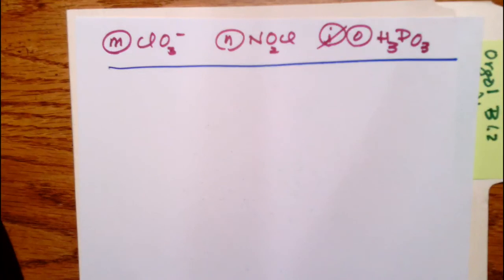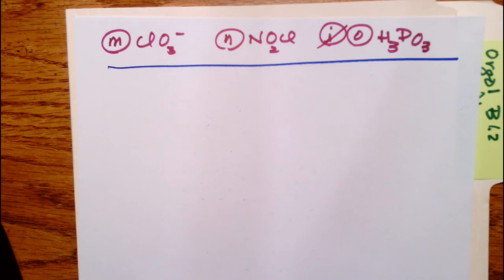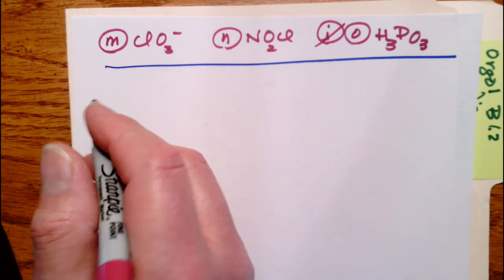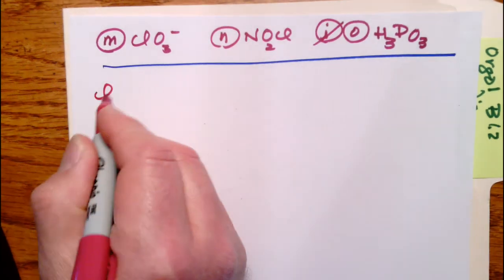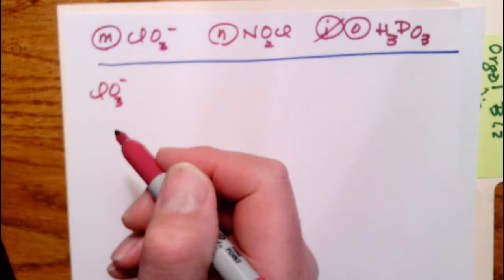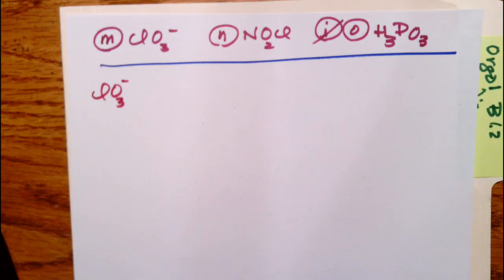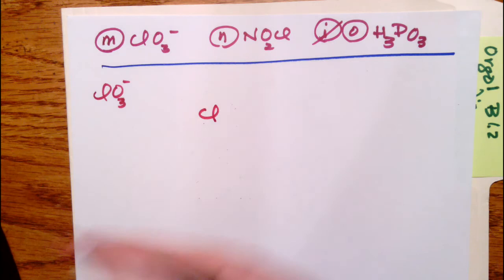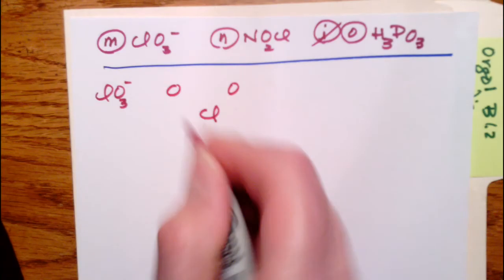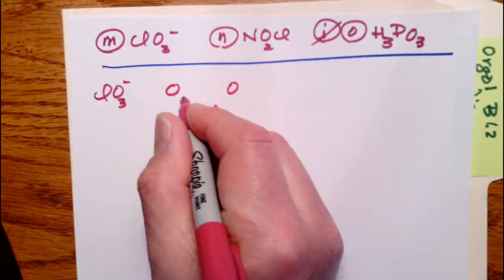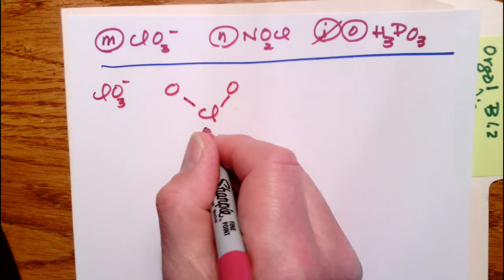So we're going to go back and look at M and N. In the case of M, we have ClO3-. Like before, Cl is going to be the center atom. So we have three O's to deal with. As always, draw the little line sharing two electrons.